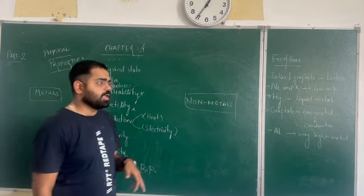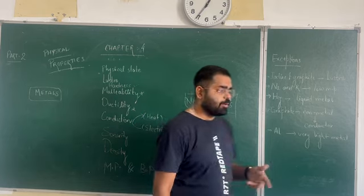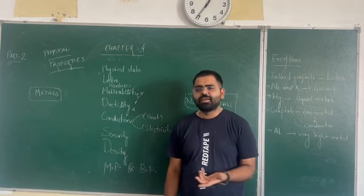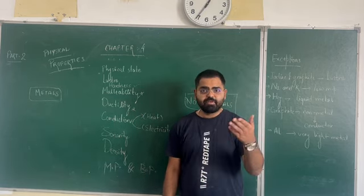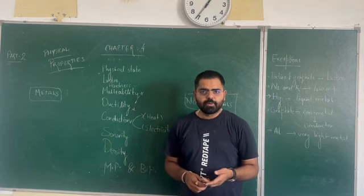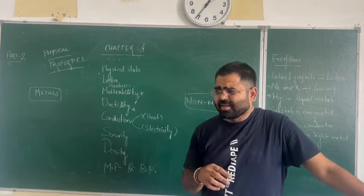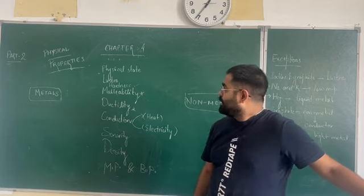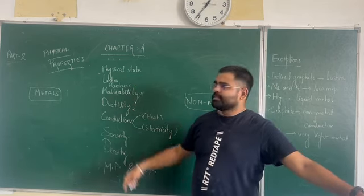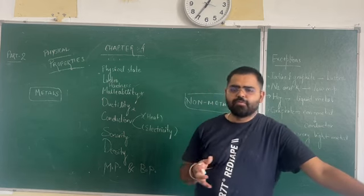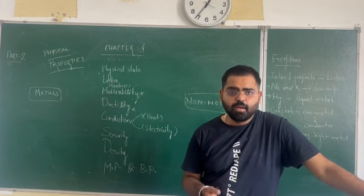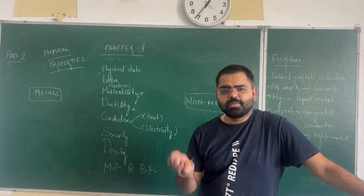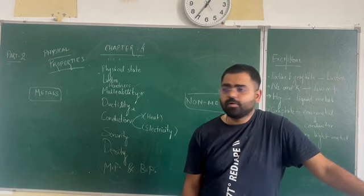Next comes lustre. Except for your iodine and your graphite, graphite is a form of carbon that we have seen in chapter on coal and petroleum. It is a type of non-metal only, but it has a specific type of shininess on it. As far as hardness is concerned, like 10 to 15 non-metals are there which are quite hard, but their hardness is not as much as compared to that of your solids.